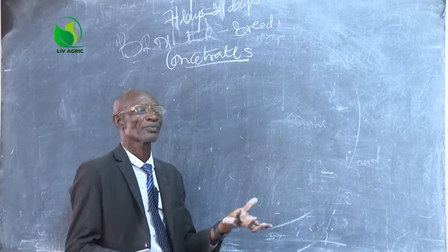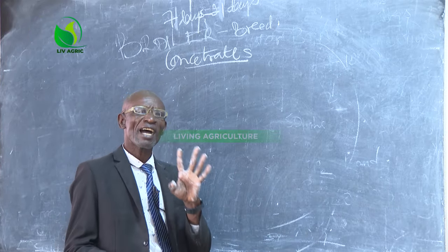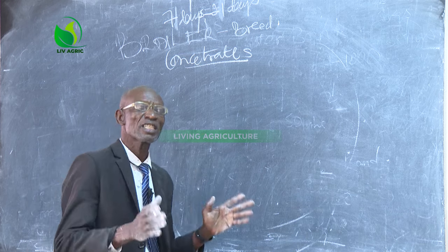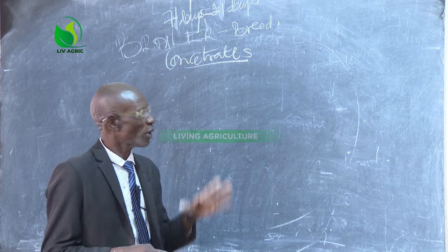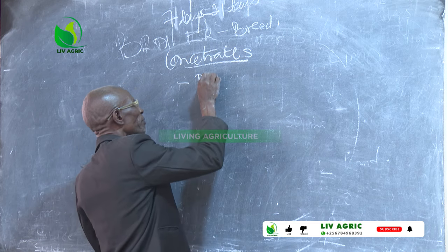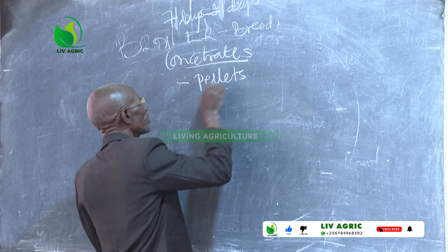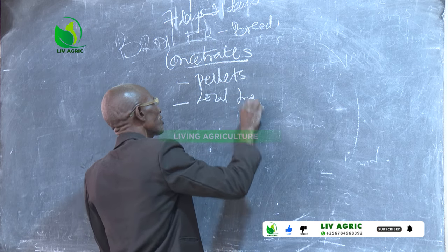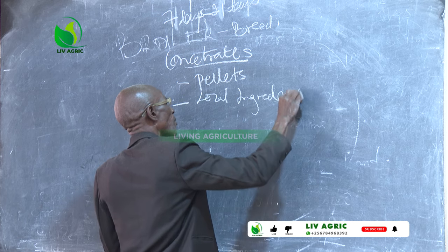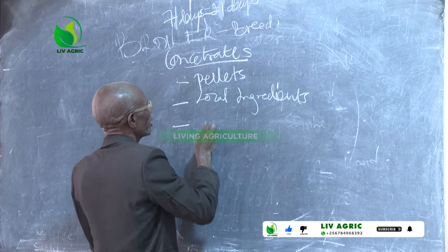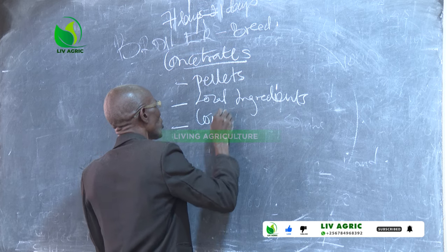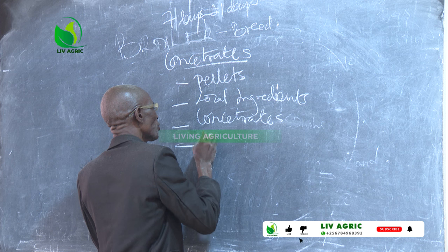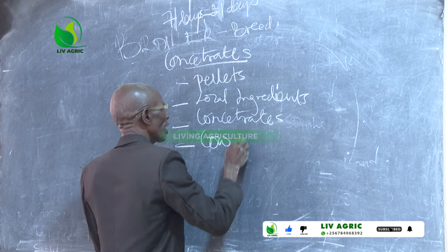As I said before, we have three to four types of EDC formula, whereby we started with the pellets. Secondly, with the local ingredients. Then here we are going to use the concentrates. And finally, what we use is cow dung.